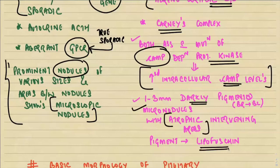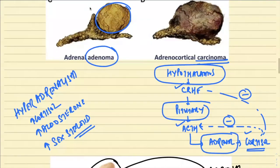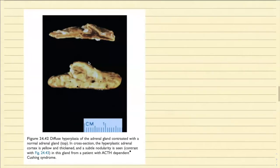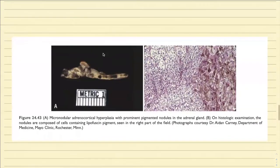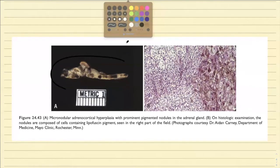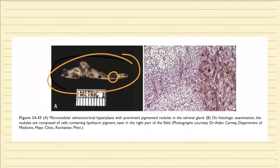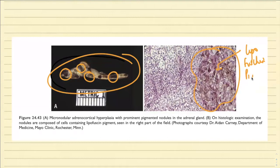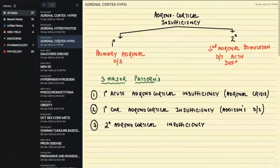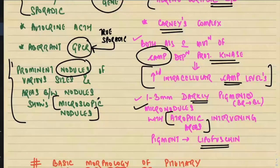Grossly in micronodular hyperplasia, you see one to three millimeter darkly pigmented brownish-black micronodules; the intervening areas are atrophic. The pigmentation occurs because of the deposition of lipofuscin. Can you appreciate this variety? There are alternate areas of pigmentation — this is the micronodular variety, showing deposition of hemosiderin or brownish pigment, which is nothing but lipofuscin. This is characteristically seen in bilateral micronodular adrenocortical hyperplasia — lots of MCQs come from this point.